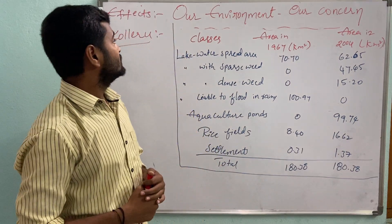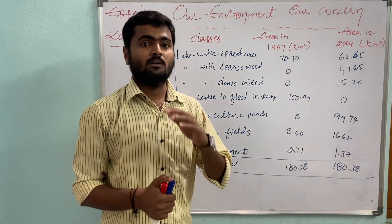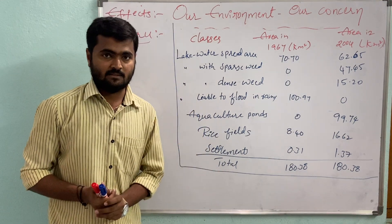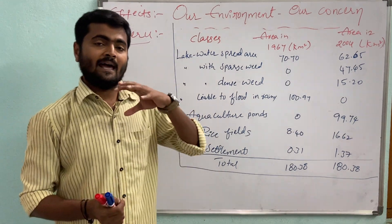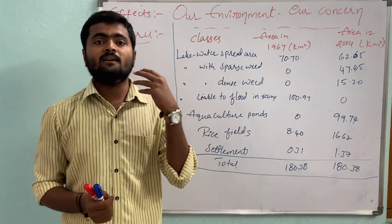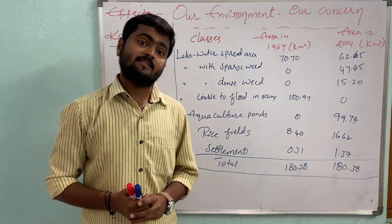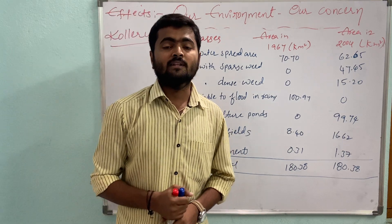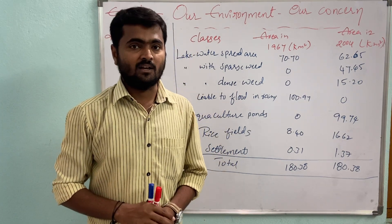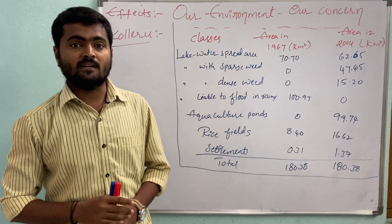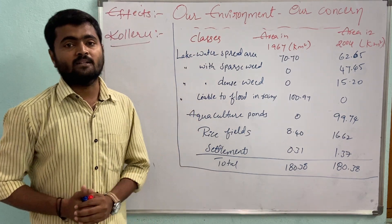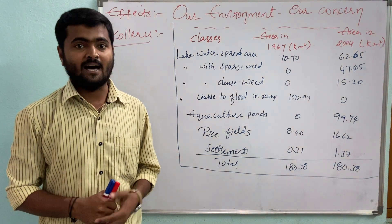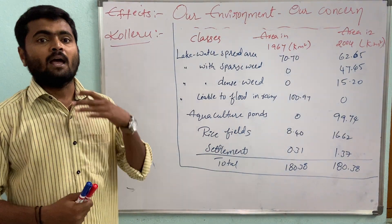Today we are going to discuss about the effects on ecosystems — how human activities are damaging the ecosystem. We have already discussed in our earlier classes, like 8th and 9th, how because of human interventions, air, water, and soil pollution have taken place. In this lesson, we will discuss how human interventions have caused the ecosystem to become imbalanced.